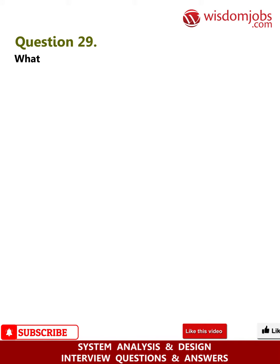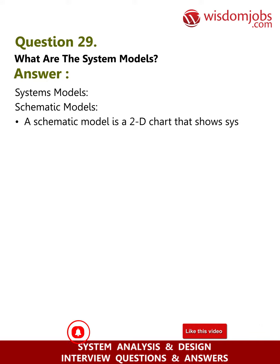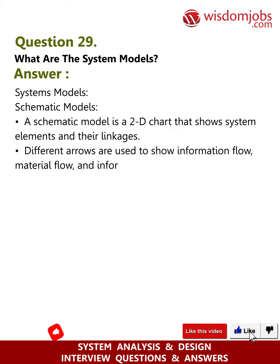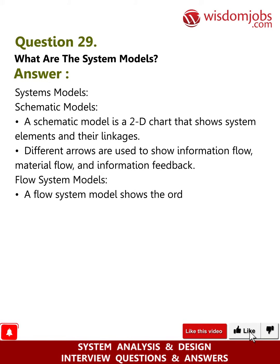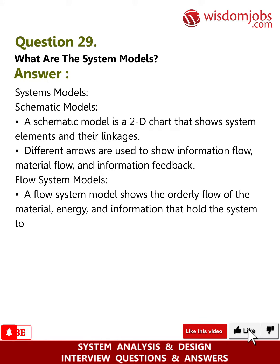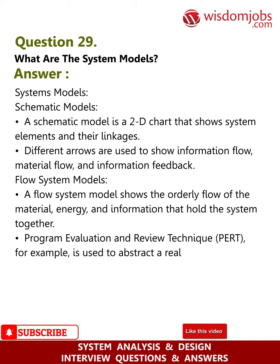Question 29: What are the system models? Answer: Schematic models — a schematic model is a 2D chart that shows system elements and their linkages. Different arrows are used to show information flow, material flow, and information feedback flow. Flow system model: shows the orderly flow of material, energy, and information that hold the system together. PERT (Program Evaluation and Review Technique) is used to abstract real-world systems in model form.